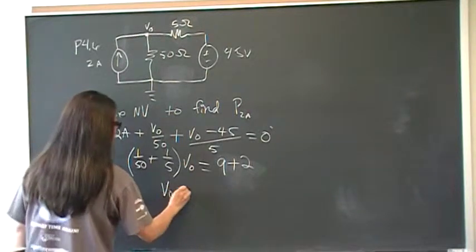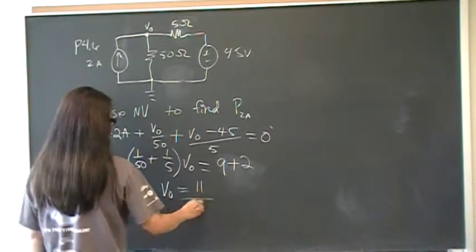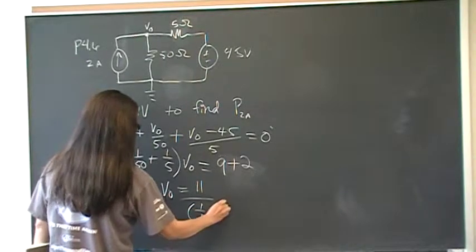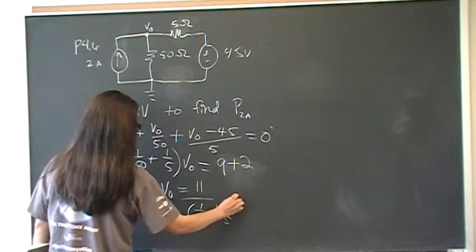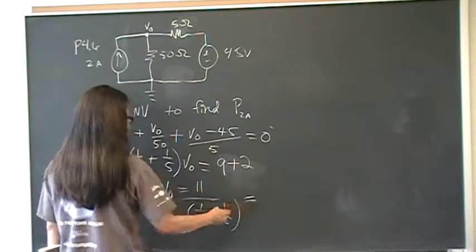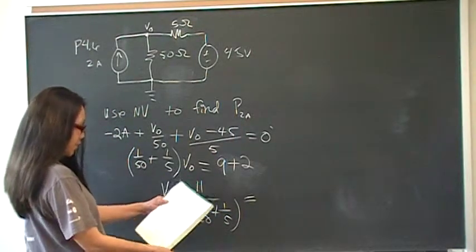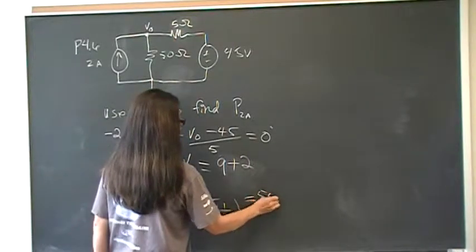And so, V0 is going to be 11 divided by this ugly thing, plus 1 fifth. And if you put that into your calculator, you will come up with V0 is equal to 50 volts.